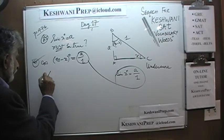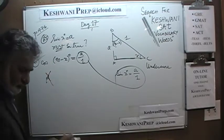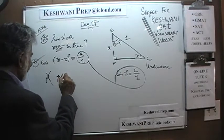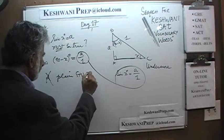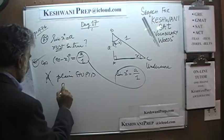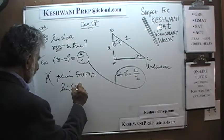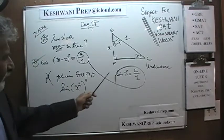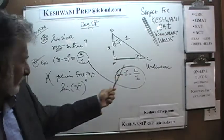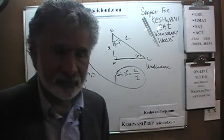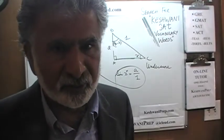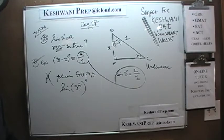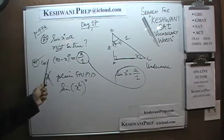Answer choice D is just plain wrong. What we are doing there is trying to find sine of x squared degrees. For example, if x turns out to be 60, then we are looking at sine of 3600 degrees; or if x is 30, we are looking at sine of 900. It is nonsensical. The answer is C.